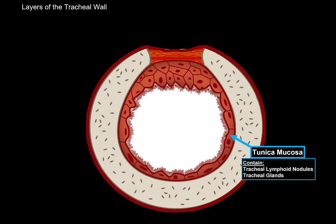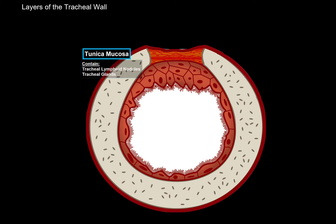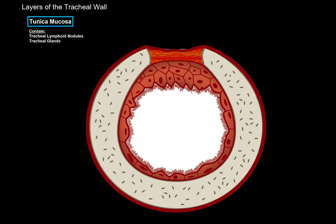The tunica mucosa contains tracheal lymphoid nodules, which help fight against microorganisms in the air. It also contains tracheal glands that lubricate the surface of the respiratory tract, making it more adhesive to any irritants or organisms in the air. Once these irritants are caught, you would usually start coughing to aid in removing them. So that's the tunica mucosa. The next layer is the Tela Submucosa, which contains loose connective tissue and blood vessels.